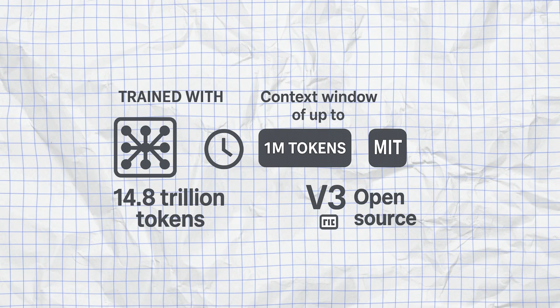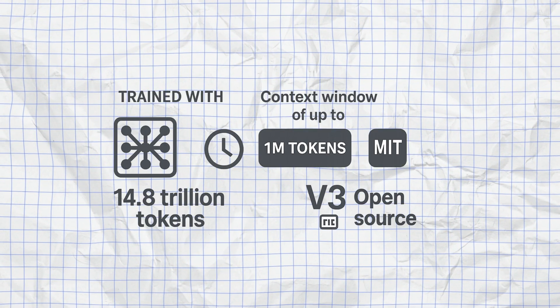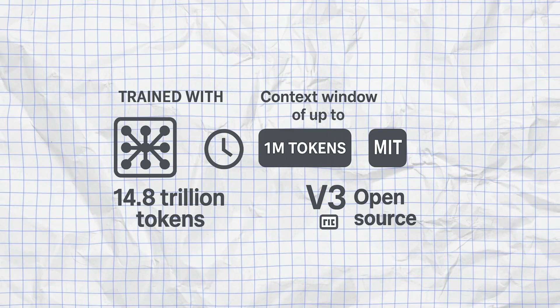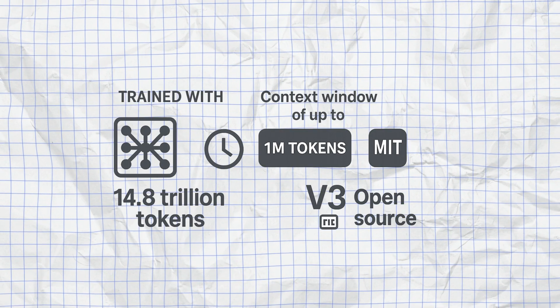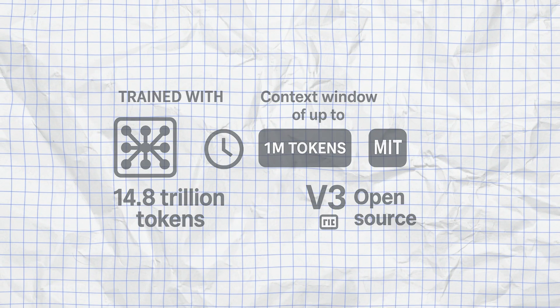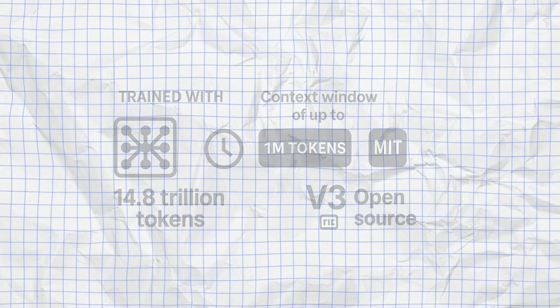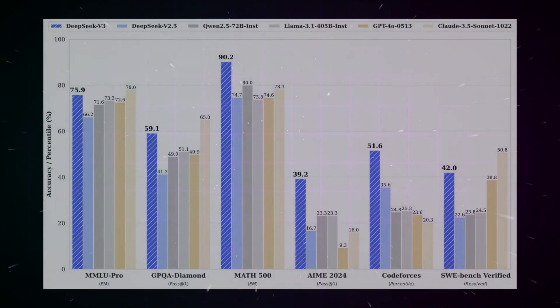Especially important: V3.1 is completely open source under the MIT license. This means you can freely download it, modify it, and even use it in commercial projects — a huge advantage over closed commercial models.